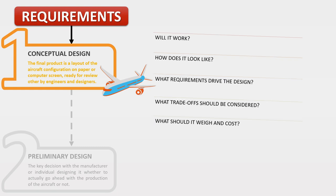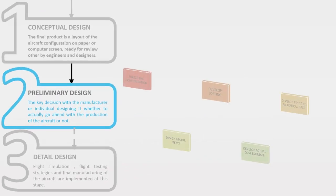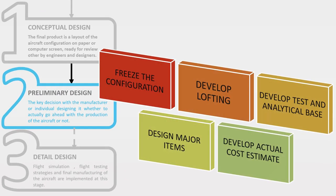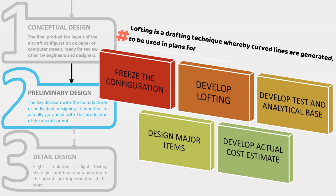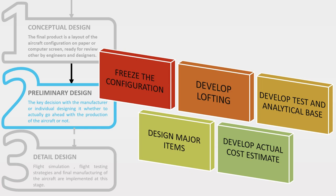Coming to the next phase is preliminary design, which arrives at the outcome of the conceptual design phase. In preliminary design, it freezes the optimum design configuration and from there develops the lofting, which undergoes several testing procedures — including wind tunnel testing, CFD flow analysis, and structural and control analysis. Aerodynamic flaws and structural instabilities, if any, are corrected.